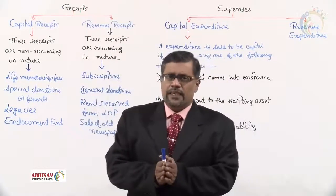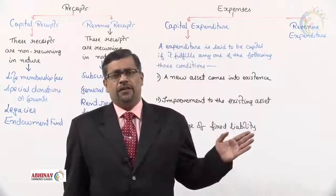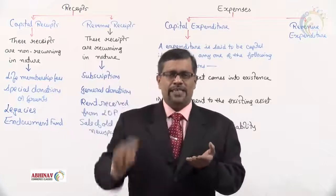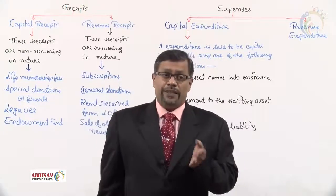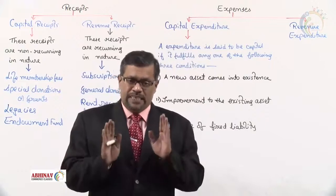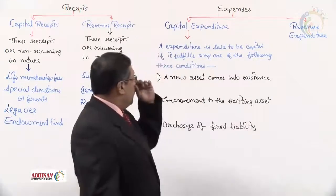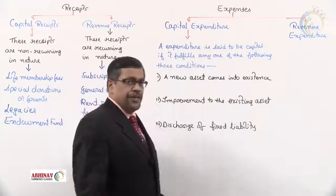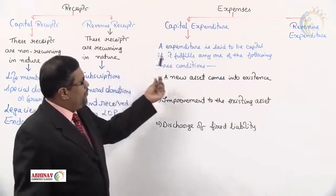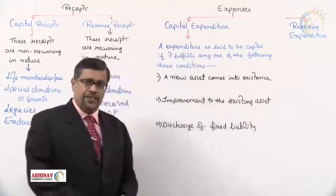After receipts, the very important concept is expenditure — money spent by the organization. Expenditure can be classified into capital and revenue. An expenditure is said to be capital if it fulfills any one of the following three conditions.